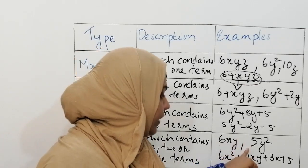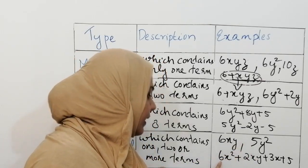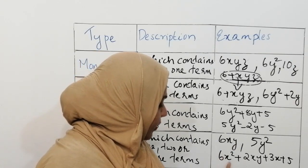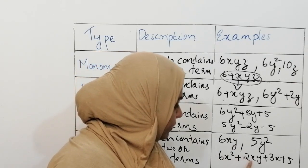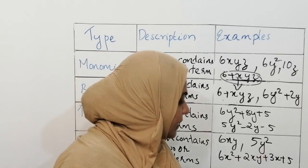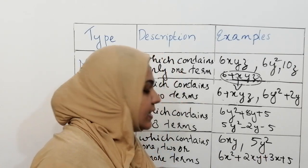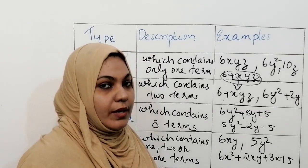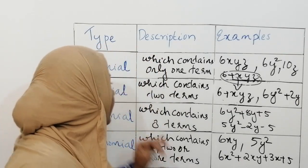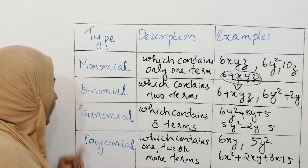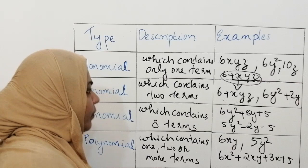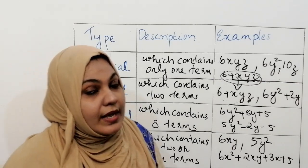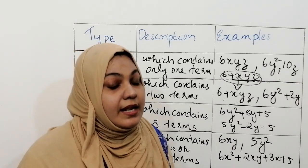Similarly, 5y squared is also a polynomial. And here you can see 6x squared plus 2xy plus 3x plus 5 — it has four terms, so it is a polynomial. I hope you understood what is monomial, binomial, trinomial, and polynomial — the different types of algebraic expression.